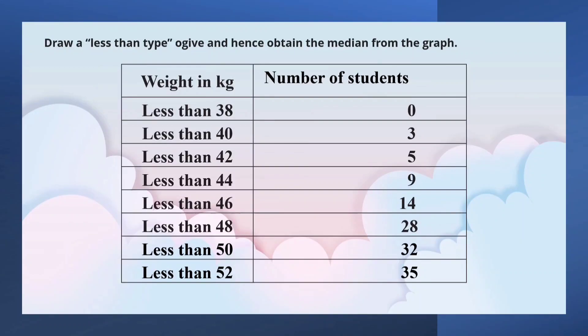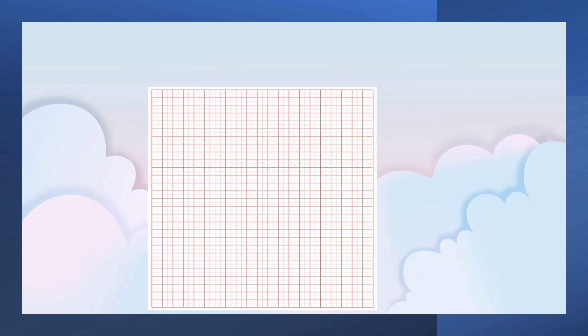Draw a less than type ogive and hence obtain the median from the graph. Weight in kilograms is given in the first column and number of students is given in the second column. Total number of students is 35. Now let us have a graph sheet.